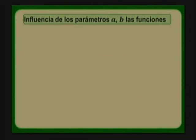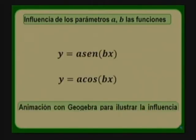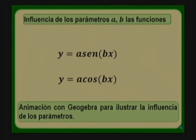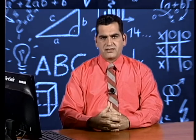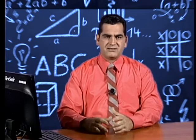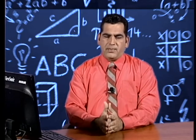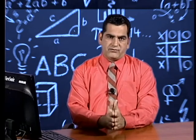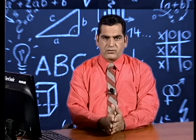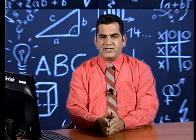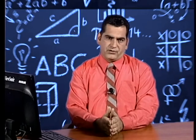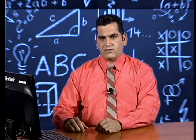Vamos a ver en GeoGebra la influencia del parámetro A y el parámetro B en la función seno y la función coseno. El parámetro B influye en el periodo de la función: el periodo de la función seno y coseno es 2pi, y cuando multiplicamos por B el ángulo, el nuevo periodo será 2pi sobre B. Esto influye en si el periodo aumenta o disminuye. Lo veremos gráficamente con GeoGebra.